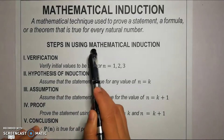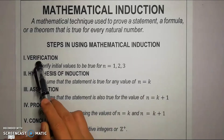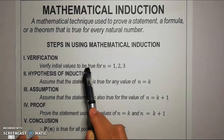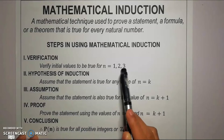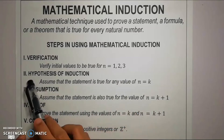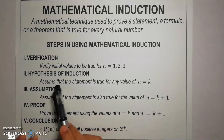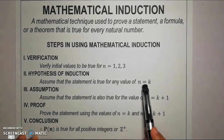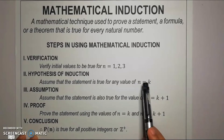These are the steps in using mathematical induction. The first step is verification — we need to verify initial values to be true for n equal to 1, 2, and 3. The next step is the hypothesis of induction — we need to assume that the statement is true for any value of n equal to k, so we will replace all n variables with k.